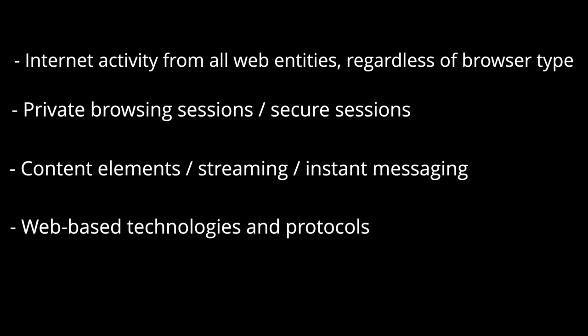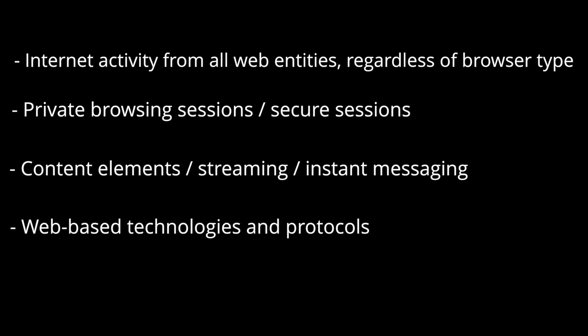We can look at Comscore's numbers for a digital property in the Comscore Top 50 to see if the recorded number of monthly unique visits was comparable. We'll use Facebook in this example. By using SimilarWeb, one of Comscore's competitors, we can see that Facebook.com's June 2020 unique monthly visitors was 90.64 million. Looking at Comscore's number, we can see that it was 90.42 million.